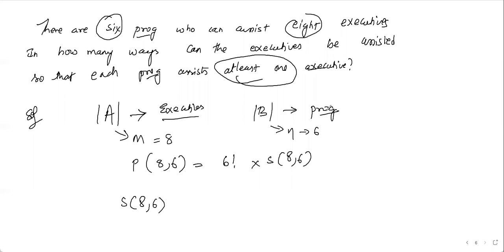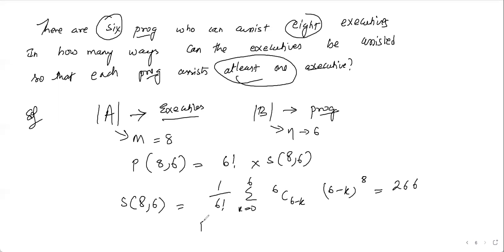P of eight comma six equals six factorial times the summation from k equals zero to six, evaluated using the onto function formula. The required number of ways is P of eight comma six divided by six factorial, which gives S of eight comma six, and from our earlier result that is 266. So for each programmer getting at least one executive, the answer is 266. Thank you for watching.